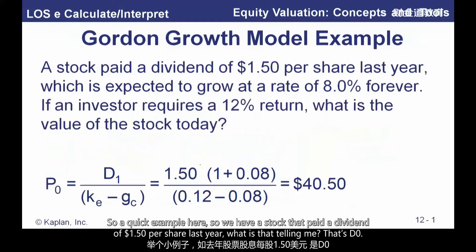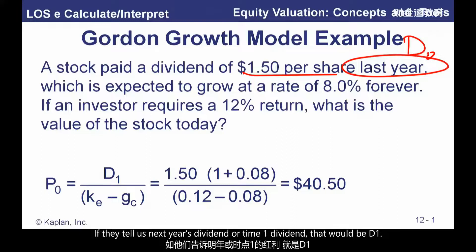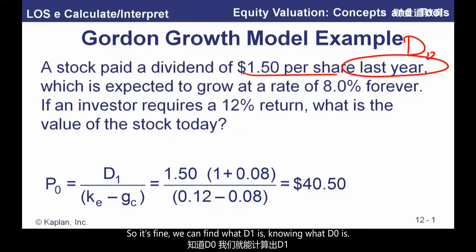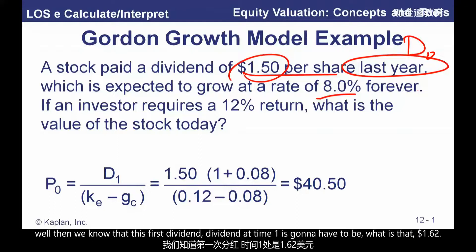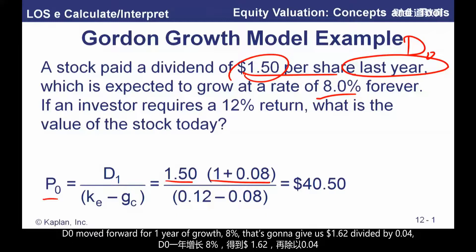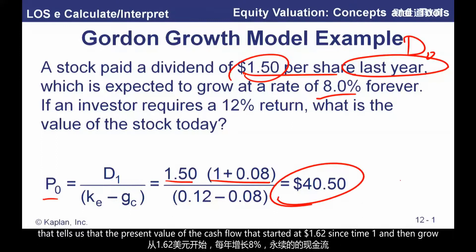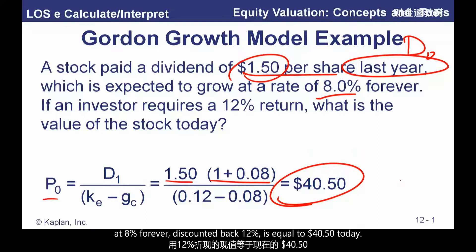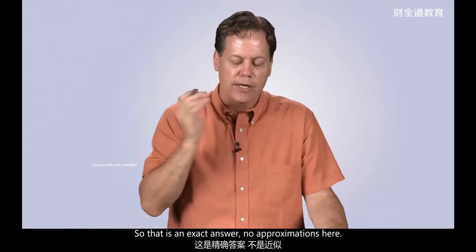Quick example: a stock paid a dividend of $1.50 per share last year — that's D0. If they tell us next year's dividend or the time one dividend, that would be D1. They never give us D at minus one — it's always D0 or D1. If D0 is $1.50 growing at 8%, then D1 is $1.62. The price today equals the dividend at time one divided by K minus G. D0 moved forward one year of growth at 8% gives $1.62, divided by 0.04, giving us $40.50 today as the present value. It's an exact answer, one of the most used formulas in the curriculum.